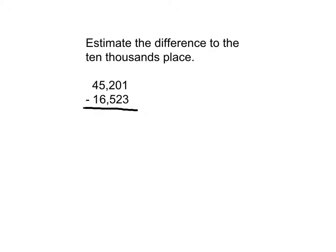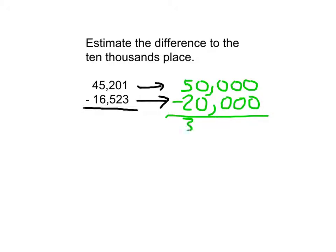In this problem, I'm asked to estimate the difference to the 10,000th place. In this instance, I'm not asked to figure out an exact answer. All it's asking for is the estimate. So I can figure out the estimate for you. It says estimate the difference to the 10,000th place. So I'll take each of those numbers and round them to the 10,000th place. 45,201 goes to 50,000. 16,523 goes to 20,000. And then I just subtract those.